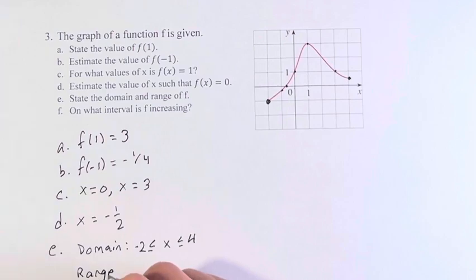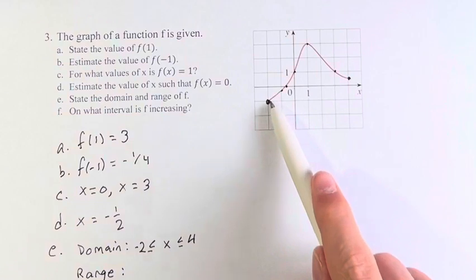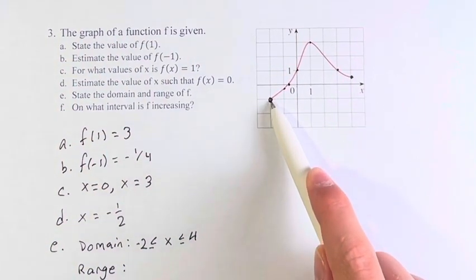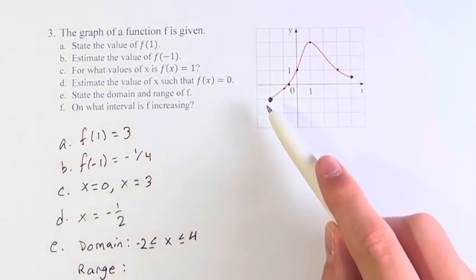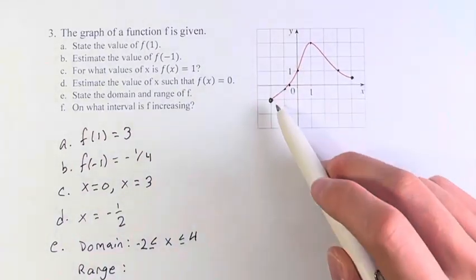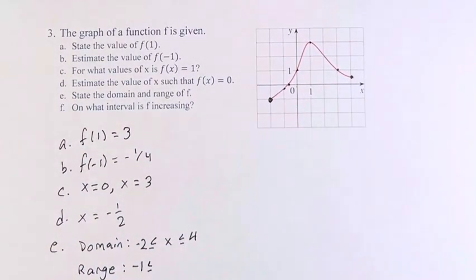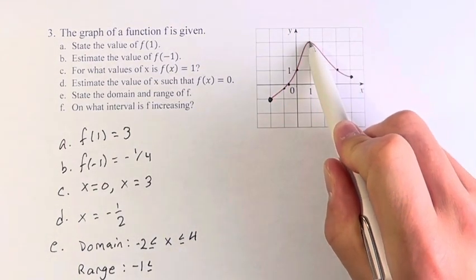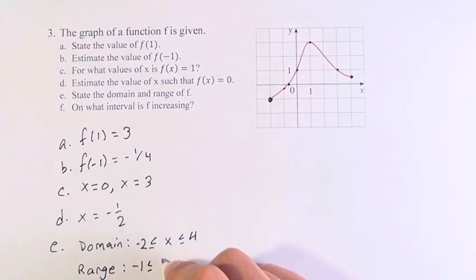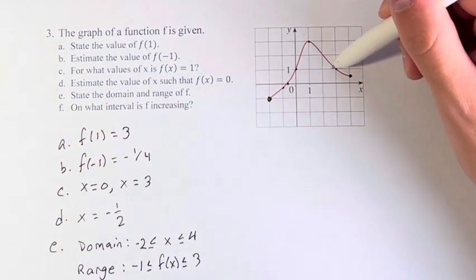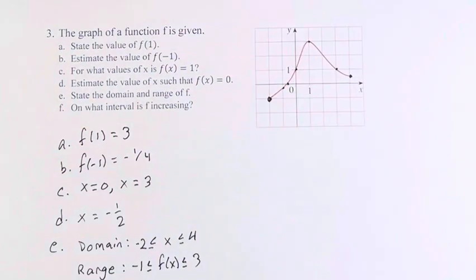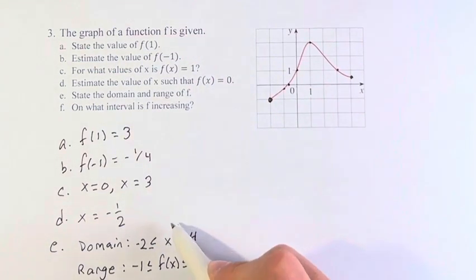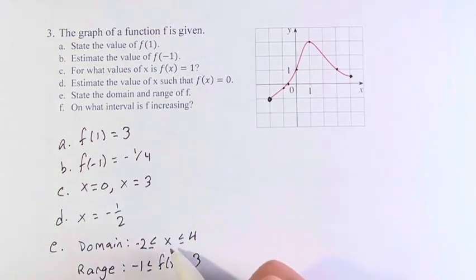The range is the values which f can take. We start at the lowest y value of -1. It's less than or equal to because we can equal -1. Then going up, this is the highest y value at 3. So f(x) can go up to 3. As we continue along the function, we don't see any values we haven't seen before. Therefore, x ranges from -2 to 4, and f(x) ranges from -1 to 3.